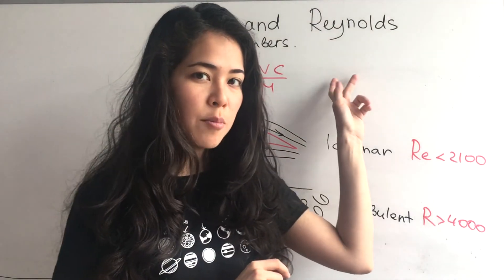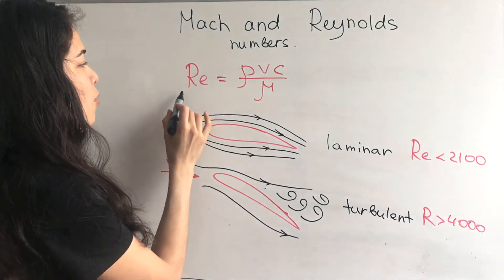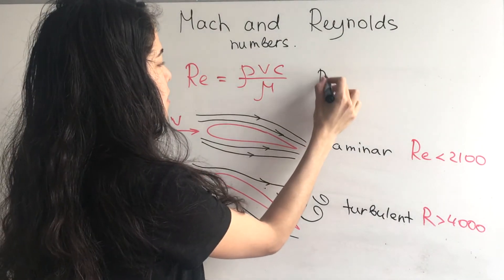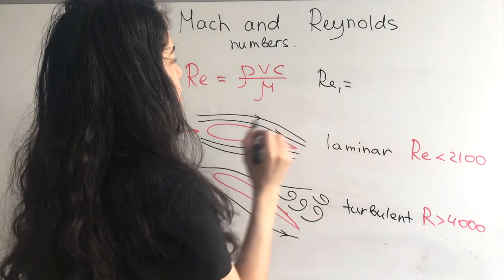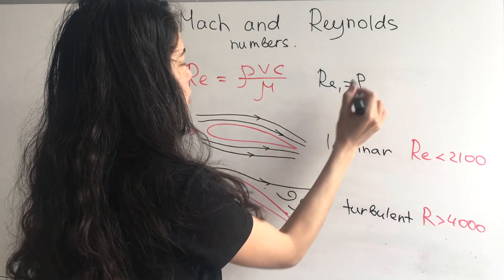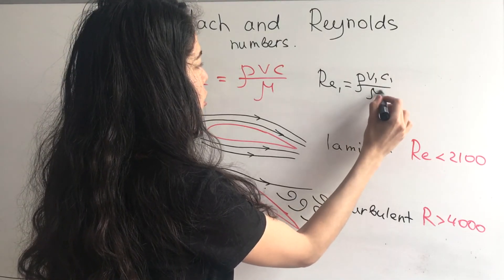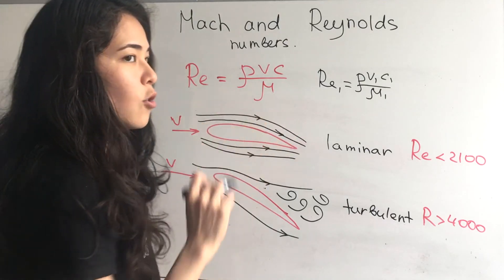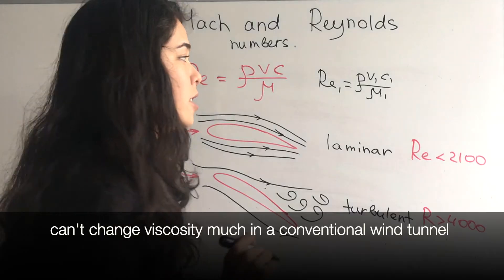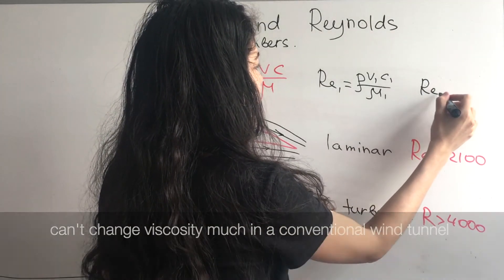So let's say in a wind tunnel, we got a Reynolds number 1, with density of air, with velocity 1, and chord length 1, which is going to be small. Viscosity is going to be low because we don't have as much air. And in the second case, when we have a full-size model, we will have a different velocity, different chord lengths, and probably different viscosity.